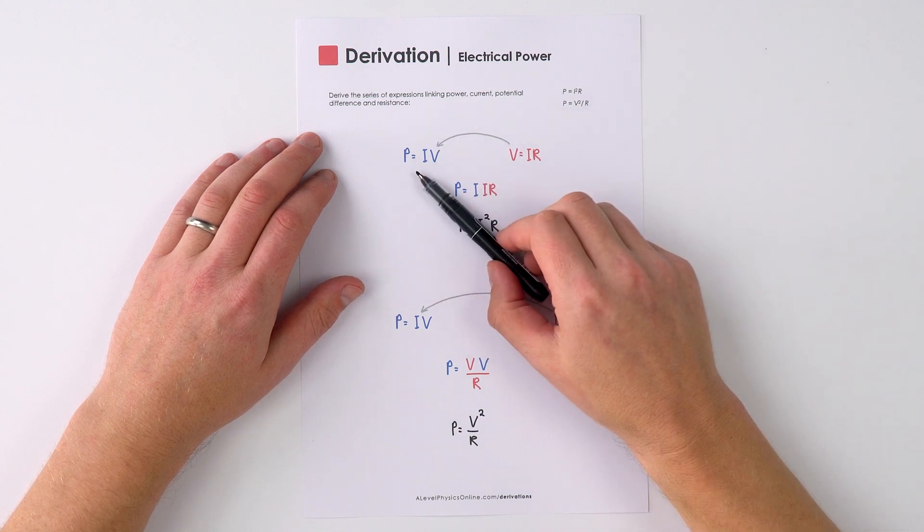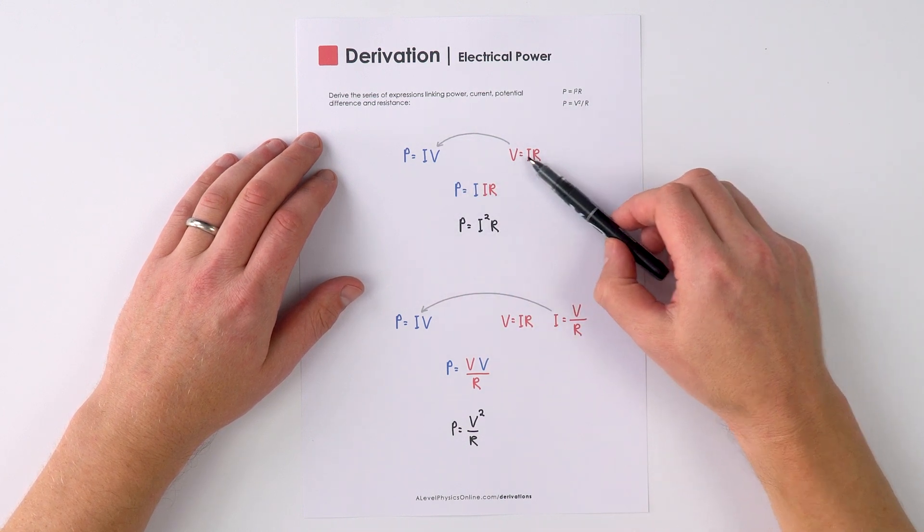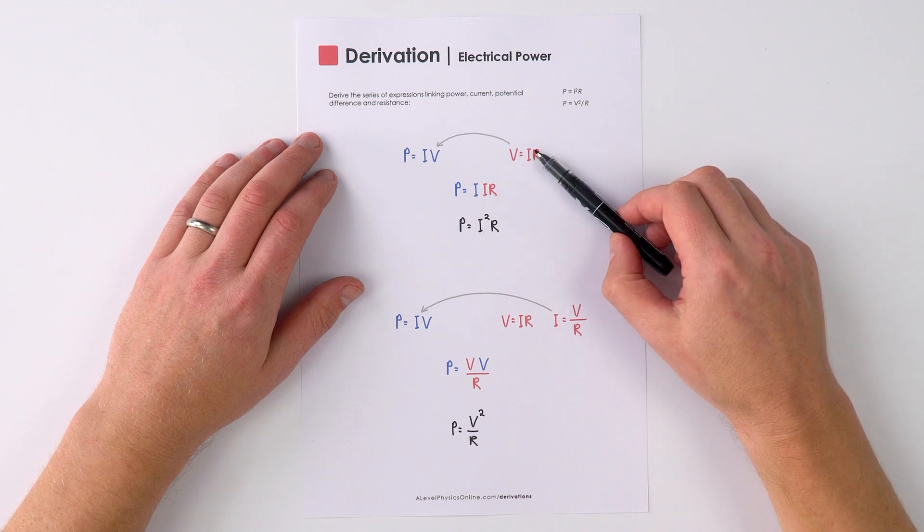Now we can start with the equation that says P equals IV, and of course V is equal to IR. You should be familiar with that equation.